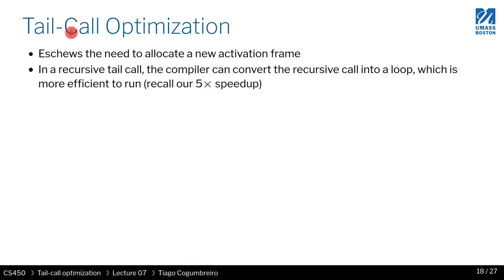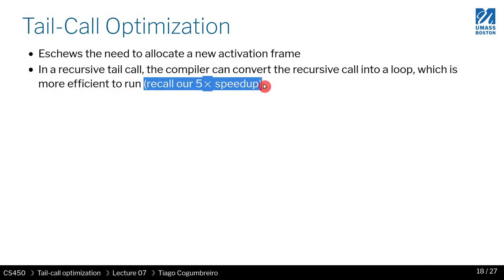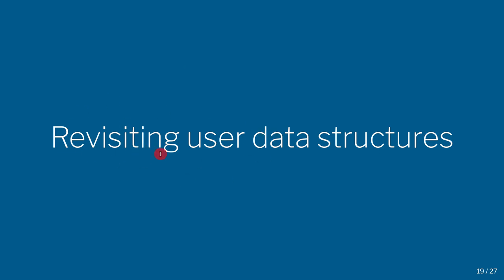In summary, tail call optimization avoids allocating a new activation frame, so the stack doesn't grow unboundedly and you see speedups — in our case a five times improvement. The compiler or runtime does this behind the scenes, but you need to know what a tail call is, which will be assessed in the second homework assignment. In the next video, we'll revisit user data structures and see what features exist in Racket to make them cleaner.